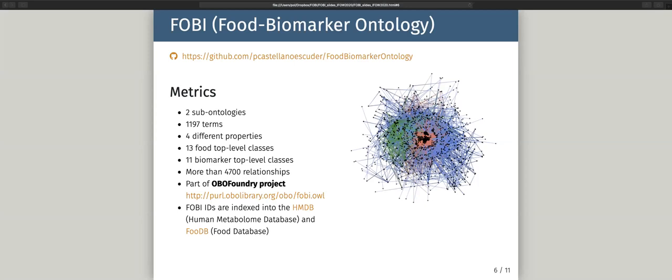We created the FOBI ontology to define the relationships between foods and metabolites. FOBI is composed of two independent but interconnected super-ontologies and contains a total of 1,097 terms, 13 food top-level classes, 11 biomarker top-level classes, and almost 5,000 relationships. FOBI is now part of the OBO Foundry, which is very important because FOBI is already indexed in other important databases such as the Human Metabolome Database and FooDB.